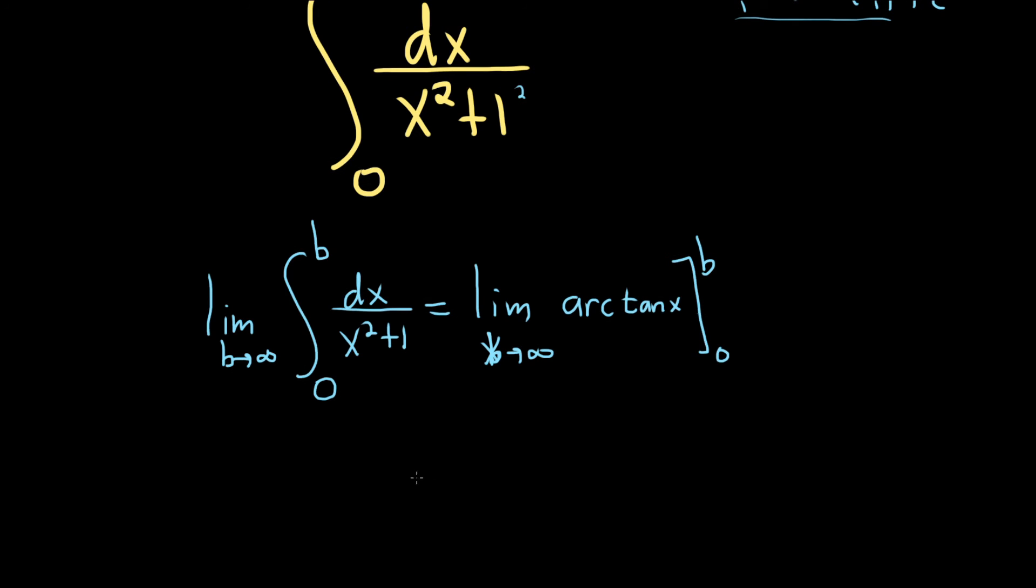So this is the limit as b approaches infinity. First you plug in b for x, so you get arctangent of b. Then you subtract and plug in 0, so arctangent of 0.